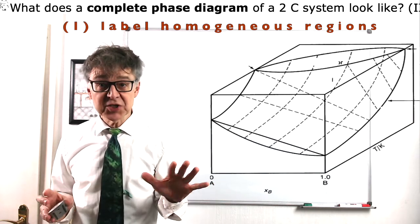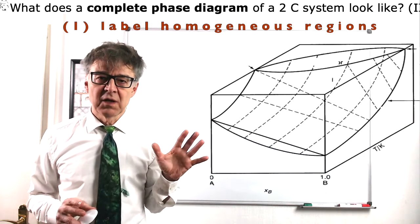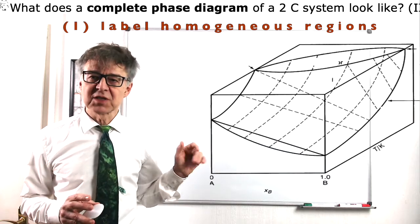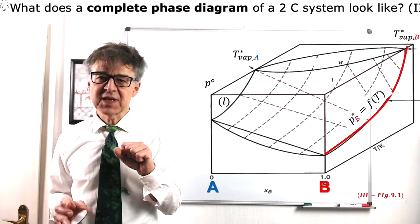The remaining regions are then multi-phase. For example, we find the homogeneous liquid phase right here and the homogeneous gas phase right there.